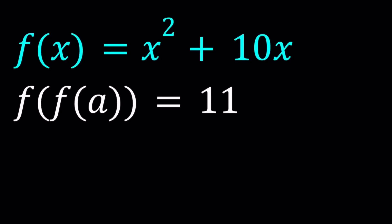Hello everyone. In this video we're going to be solving a functional equation. We have f of x equals x squared plus 10x, and f of f of a equals 11. So f is applied twice and we get 11. The question is: what is a? We're going to be solving this equation and I'll be presenting two methods.